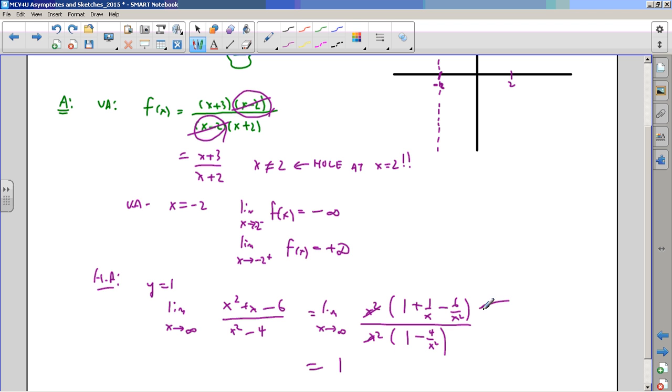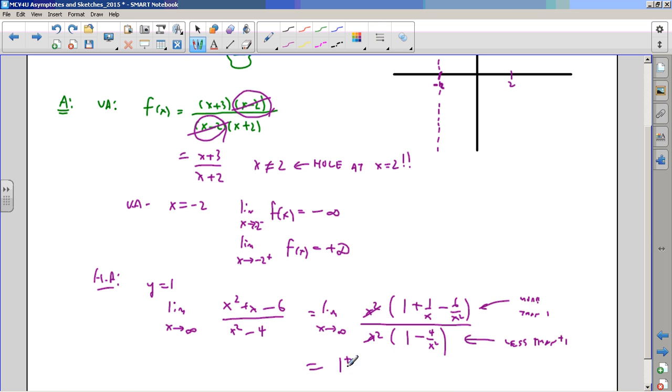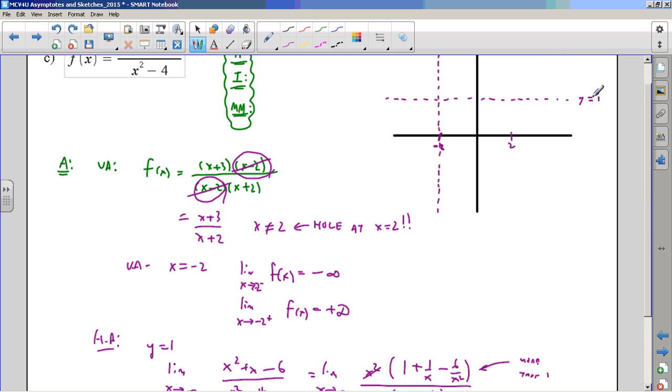And what do we got? We've got a number that's a little bit more than 1 over... That's going to be 1. A little bit more than 1, right? This is a little bit more than 1. This is a little bit less than 1. So a number that's a little bit more than 1 divided by a number that's a little bit less than 1. Well, this is going to be a number that's a little bit more than 1, isn't it? So that means this is going to approach the horizontal asymptote from above.